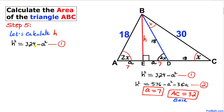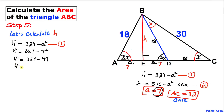Using equation 1: H² = 324 − A². Substituting A = 7: H² = 324 − 7² = 324 − 49 = 275.